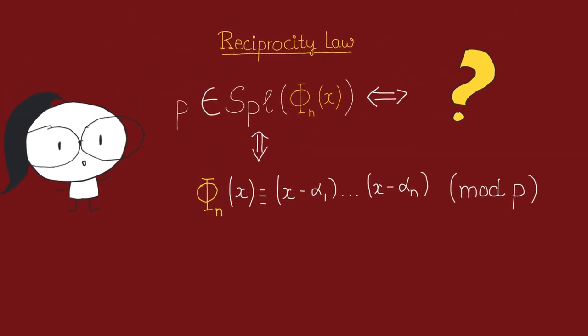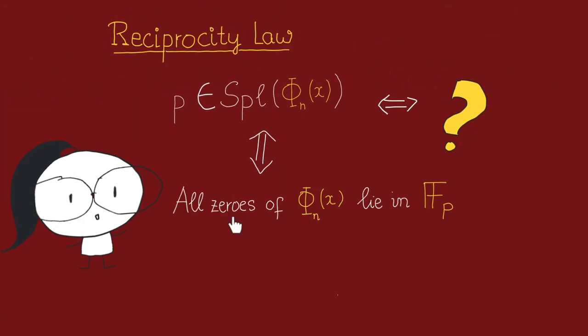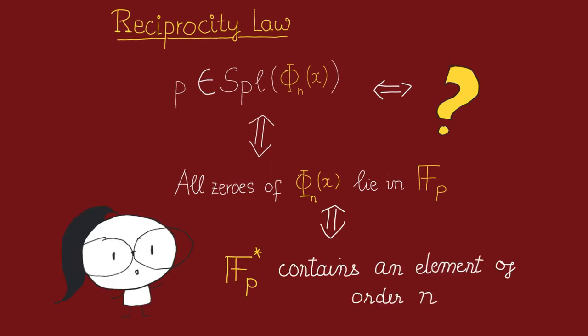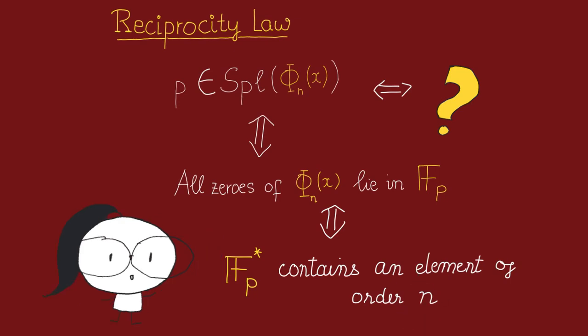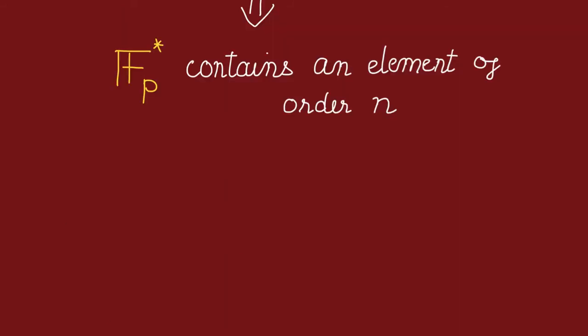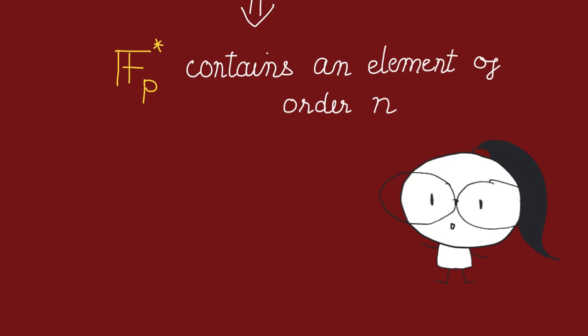Now coming back, we want to find a condition for all the zeros of this cyclotomic polynomial to lie in fp. From our previous discussion, we know that these zeros are just elements of order n in fp star. So this condition is just equivalent to fp star containing an element of order n. If it contains just one element, then it will contain the full subgroup generated by those elements. And that will account for all the zeros of this n-cyclotomic polynomial in the algebraic closure of fp.